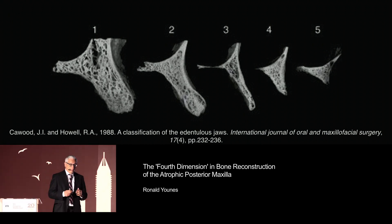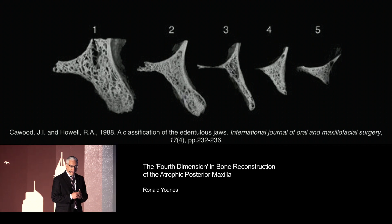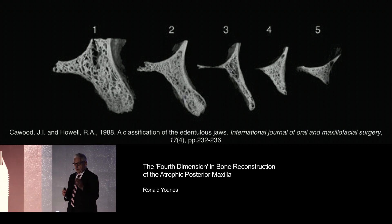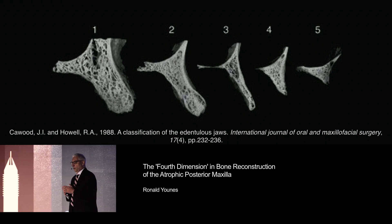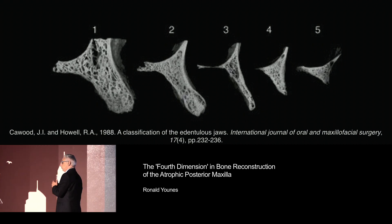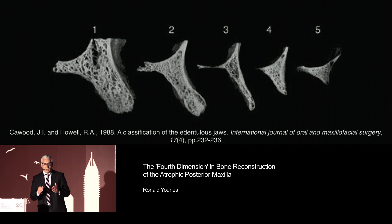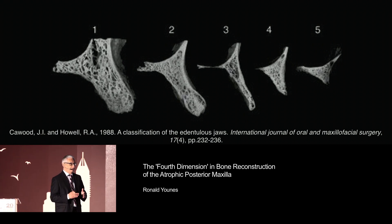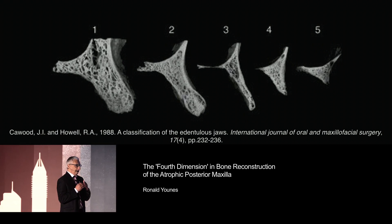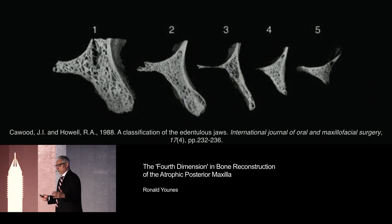Cowell and Howell, already in 1988, made a classification. In class 1, implant placement is very predictable and easy to perform, while when you are in class 5, it is very difficult to place an implant and to perform an implant rehabilitation procedure.